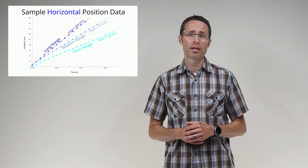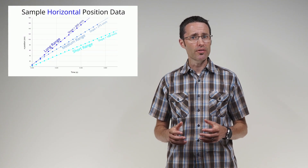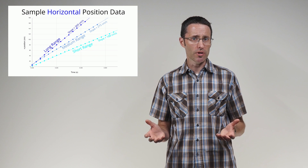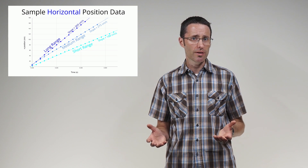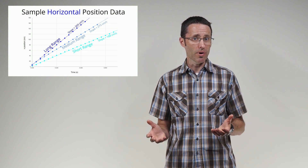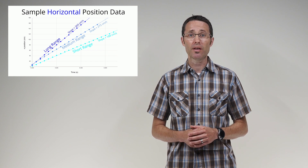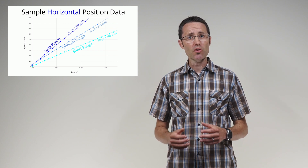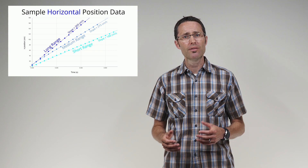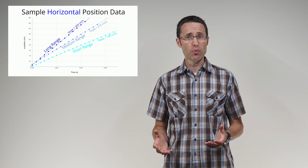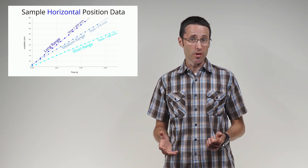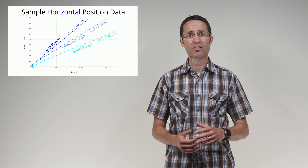Students will often question whether to include a frictional force acting on the ball by the table. To help them answer that question, point them back to their horizontal position versus time graph. If the ball's velocity is constant and there is no force pushing or pulling the ball in the direction it's moving, then any frictional forces on the ball must be insignificant. If friction was significant, the ball's speed would be decreasing. This also suggests that any frictional forces on the ball from the air, while it is off the table, must also be insignificant.